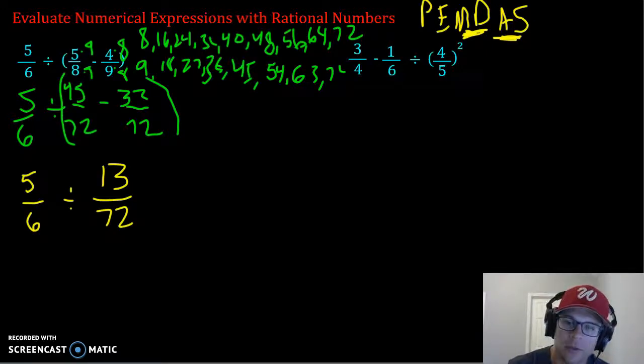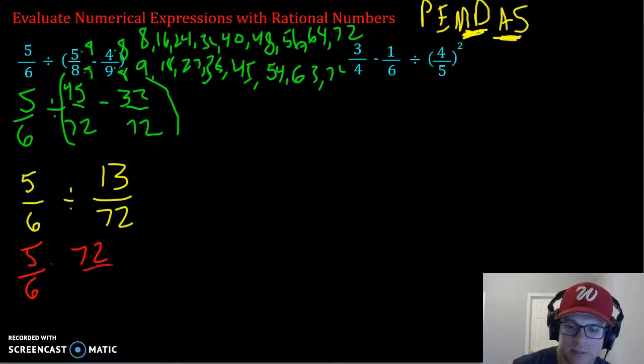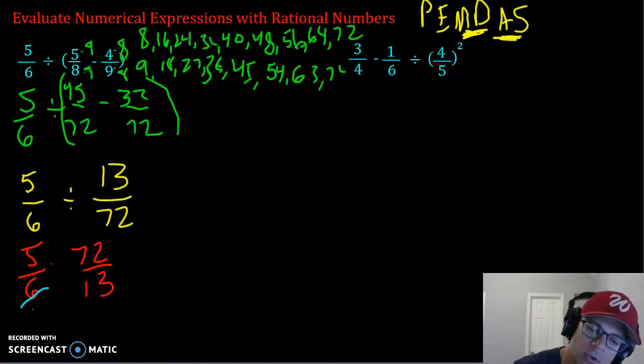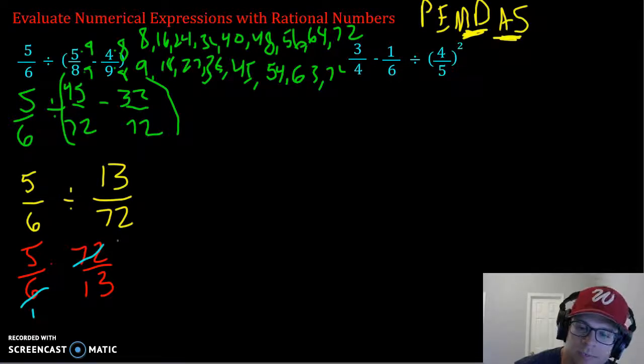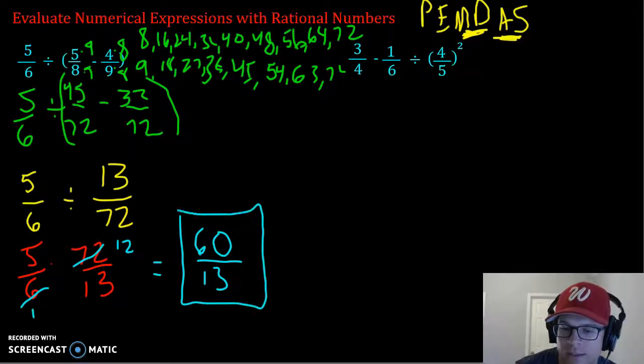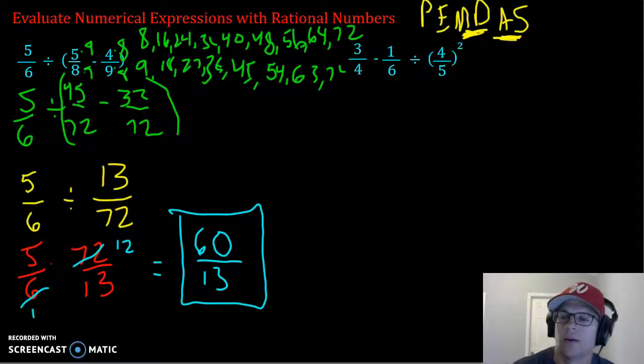Now that we've taken care of the parentheses, the only thing left we have to do is divide. Remember in order to divide fractions, you keep the first one, flip the second one, and change the sign. 6 goes into 72 twelve times, so we're going to cross-cancel by reducing. 5 and 13 are both prime, so we're good right there. 5 times 12 is 60, and 1 times 13 is 13. 13 is prime, doesn't go into 60.